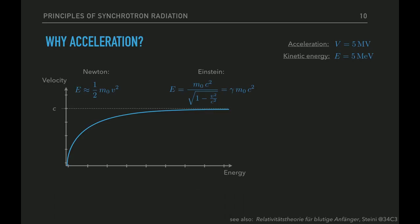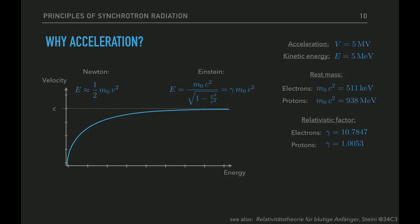Nehmen wir an, wir beschleunigen ein Elektron mit 5 Megavolt – dann ist die kinetische Energie 5 MeV. Die Ruhemasse eines Elektrons ist 0,5 MeV, für ein Proton ungefähr 938 MeV – also etwa 2000-mal mehr. Für Elektronen ergibt sich ein Gamma-Faktor von etwa 10, für Protonen ungefähr 1. Das bedeutet: Elektronen erreichen bei 5 MV etwa 99% der Lichtgeschwindigkeit, Protonen nur ungefähr 10%. Im Synchrotron möchten wir immer möglichst hohes Gamma, deshalb benutzen wir nur Elektronen.